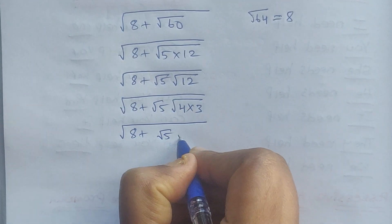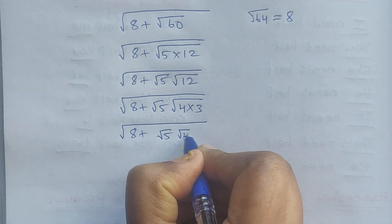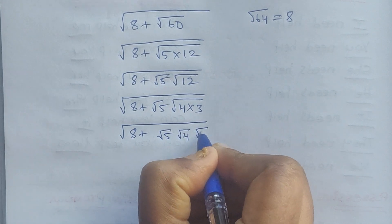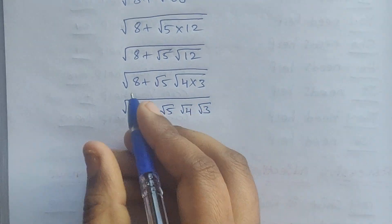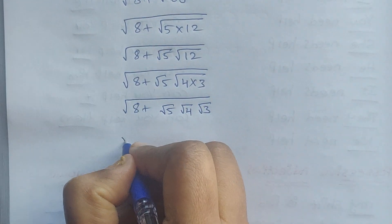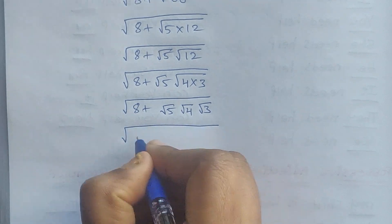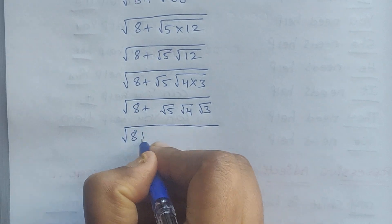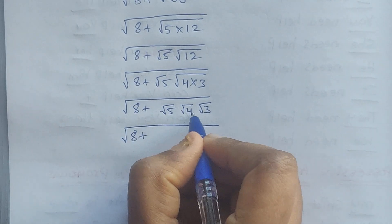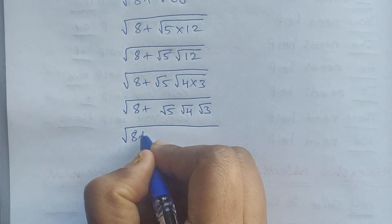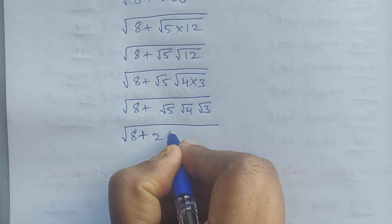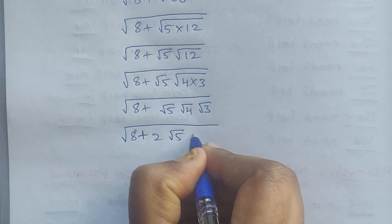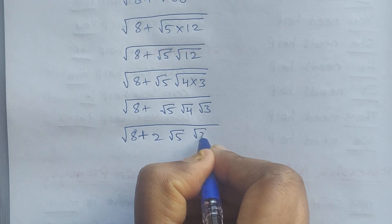So we have 8 plus square root of 4 times square root of 3. Square root of 4 is 2, giving us 8 plus 2 times square root of 5 times square root of 3.